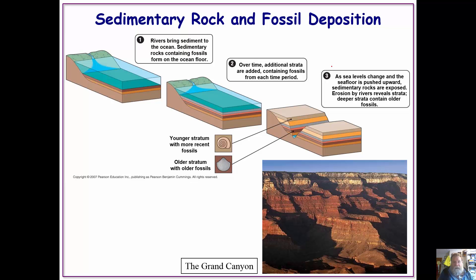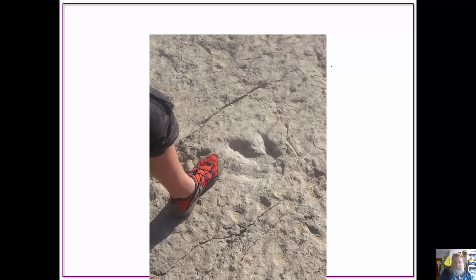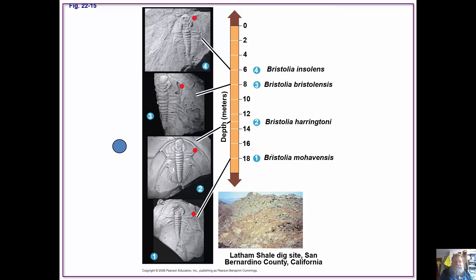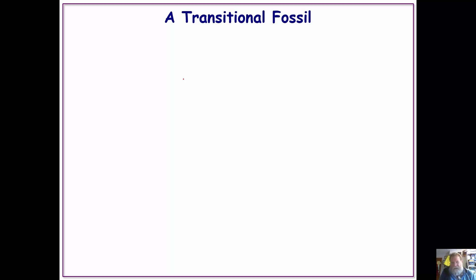We have seen sedimentary rock and fossil deposition. My son and I went to Wyoming and found dinosaur fossils — there is a footprint of a dinosaur right next to my son. We are glad we are a couple million years apart because this thing would have been very mean. We can look at older fossils and newer fossils and see evolutionary change, though I'm not entirely happy with relying on a single anatomical feature to make those determinations.